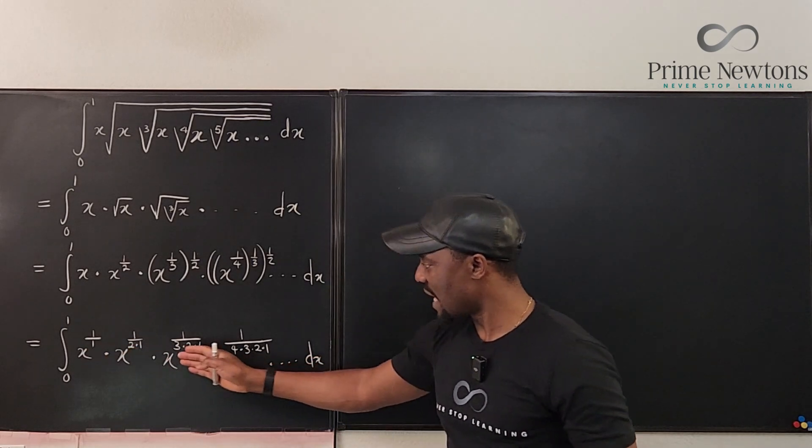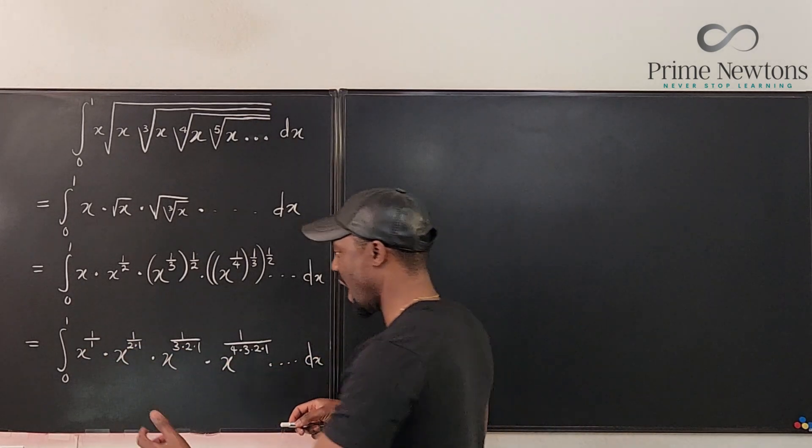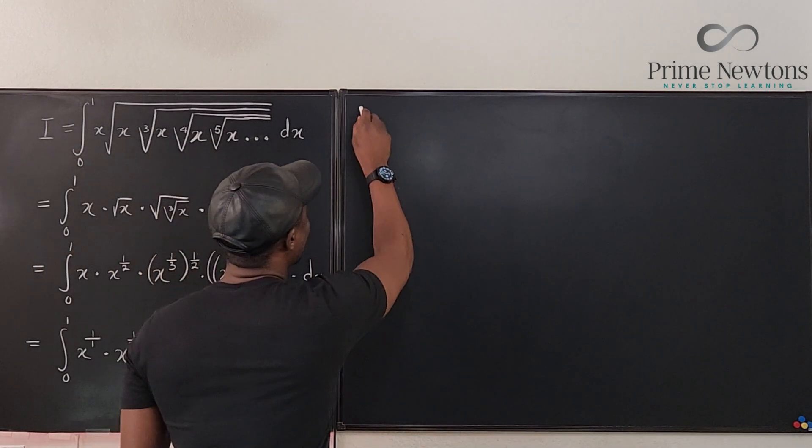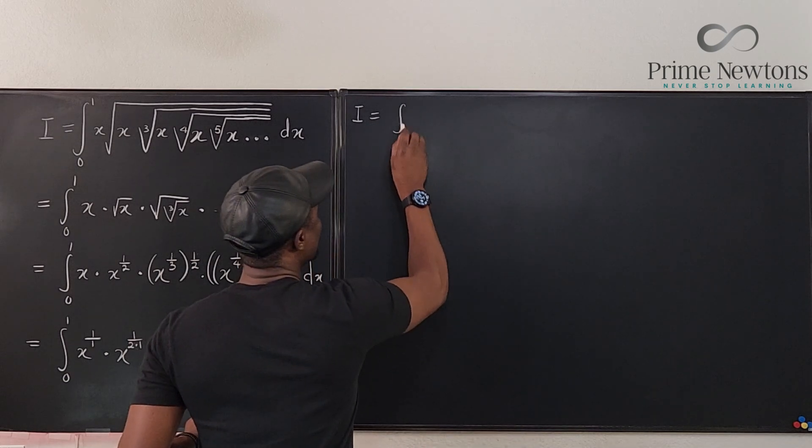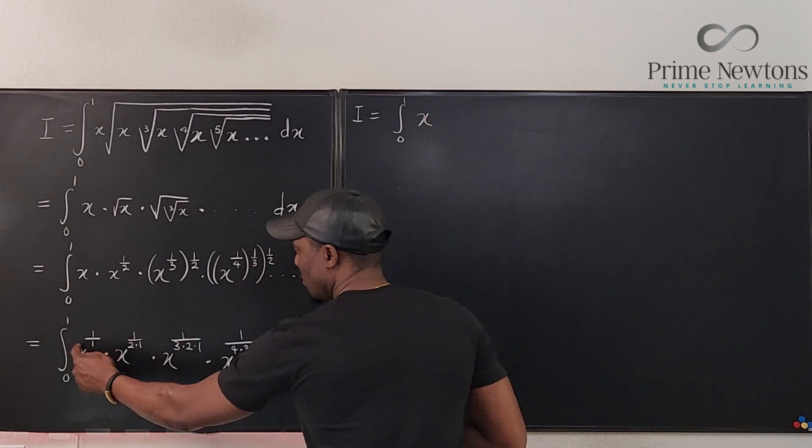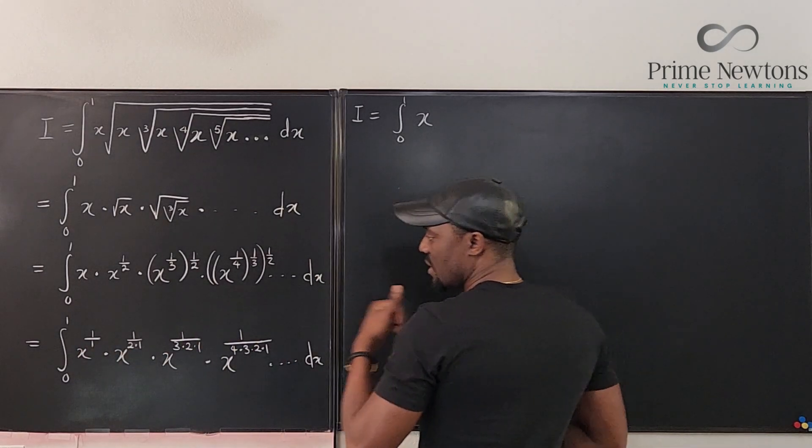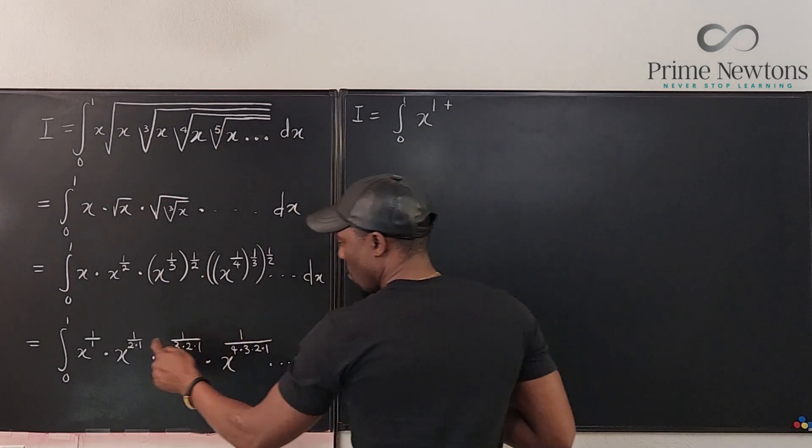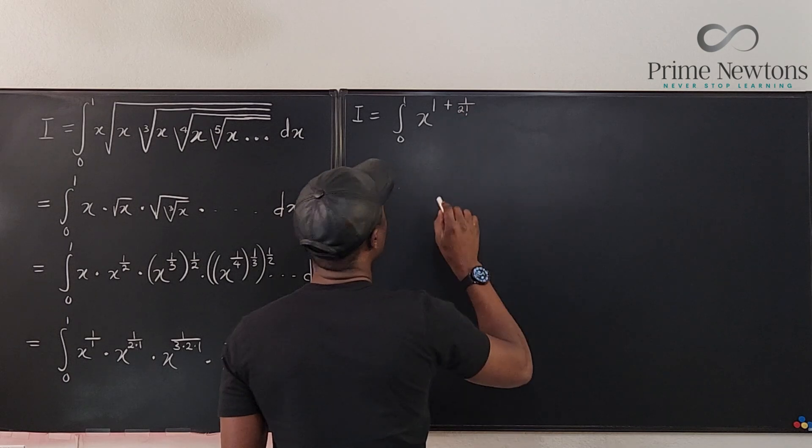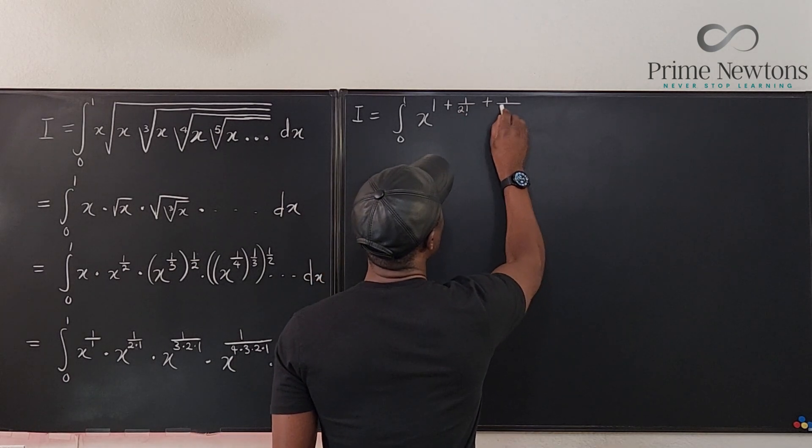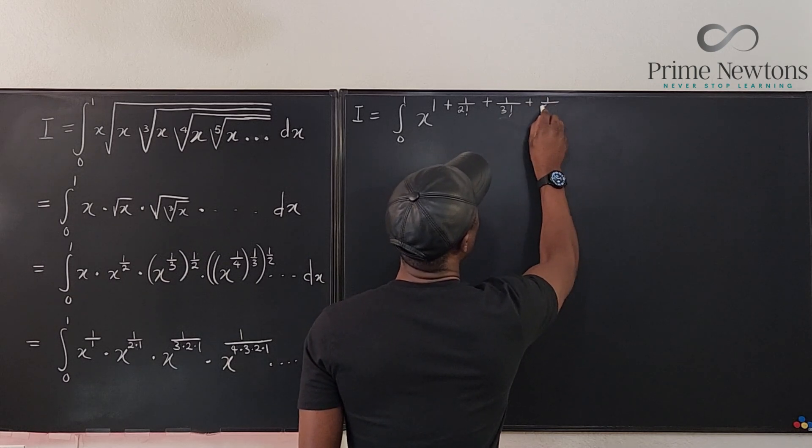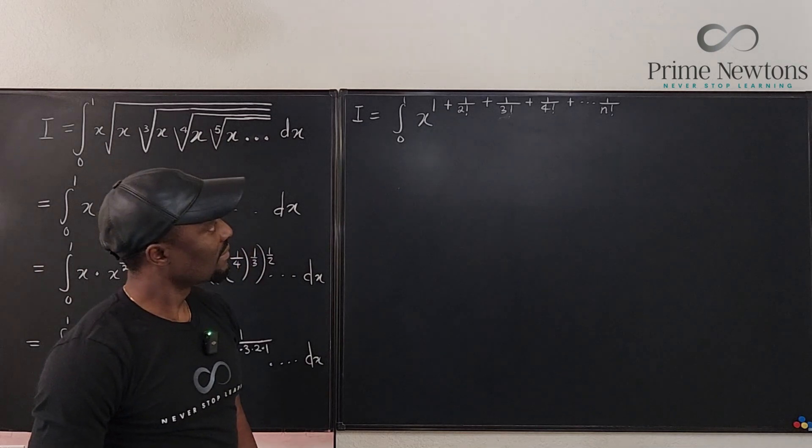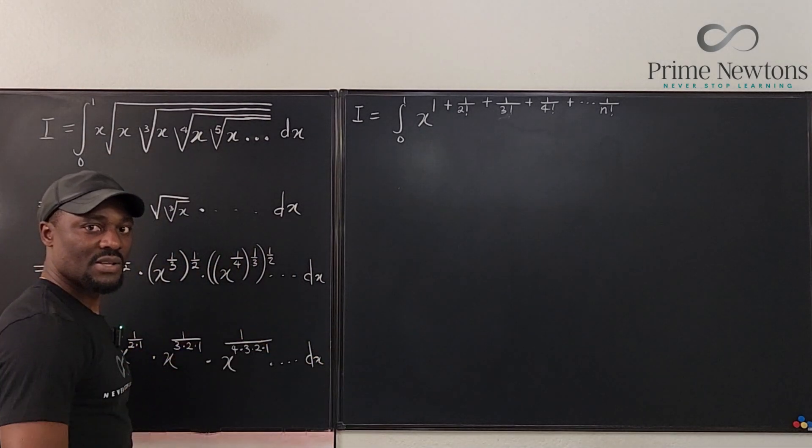Now, if we add up all of these exponents, because it's the same base in every case, we're going to have this to be equal to this integral. I'm going to call it i. So this i is going to be the integral from zero to one of x raised to power, I'm going to add up all of these exponents. So it's going to look like one plus one over two factorial plus one over three factorial plus one over four factorial plus one over n factorial. Because remember, this goes to infinity depending on how accurate you want to get.